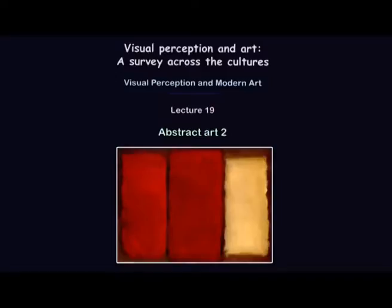Welcome viewers to the MOOC online course on visual perception and art: a survey across cultures. This is lecture number 19, an extension of our previous topic on abstract art, hence it is called Abstract Art Too. We have already seen that abstract art or abstraction generally tends to pose certain problems with regard to visual perception and our general habit of interpreting art. Making sense of an artwork has to take a very different route altogether in order to reach the core idea of any abstraction.